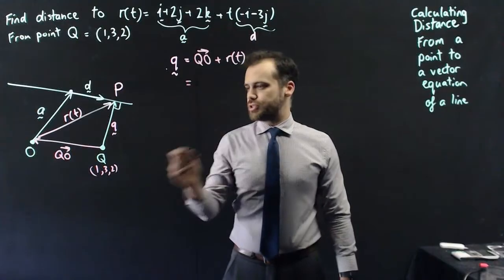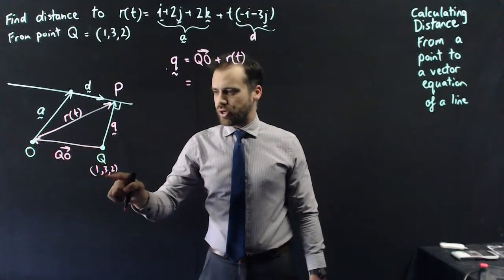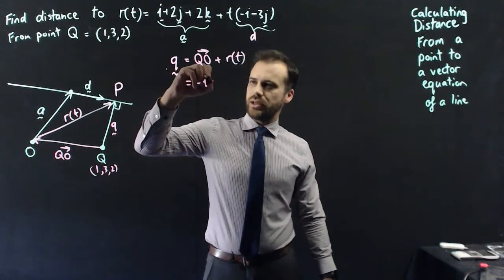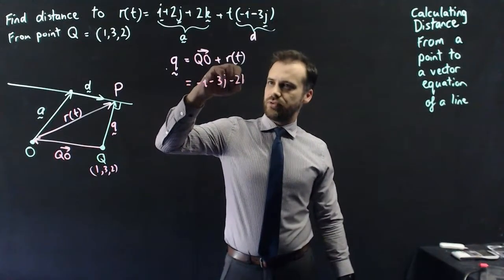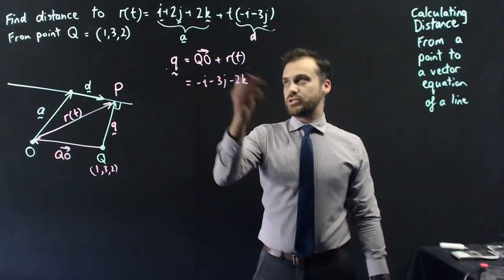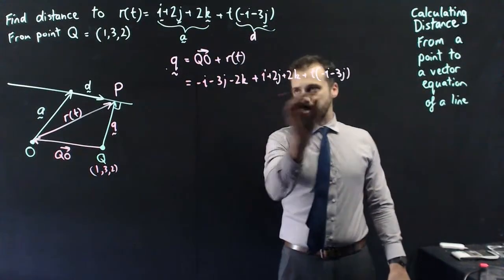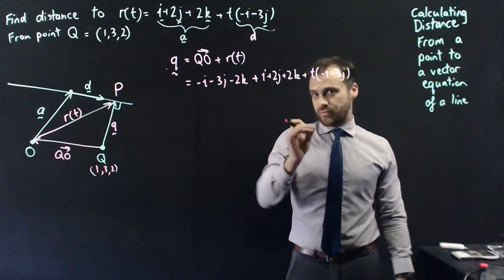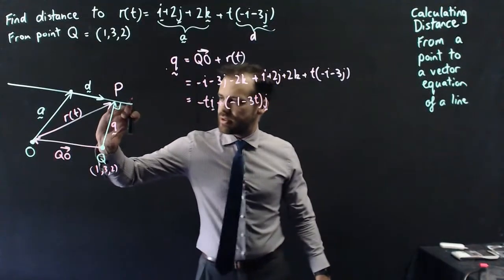So first I'm going to find an expression for vector q, equal to vector q→o plus vector r(t). Vector q→o is relatively straightforward — it's the reverse of vector o→q, which is i plus 3j plus 2k, so it becomes negative i minus 3j minus 2k. And r(t) is relatively straightforward as well. Grouping all of that together gives me a single vector equation.